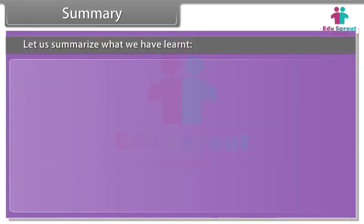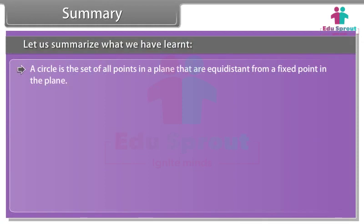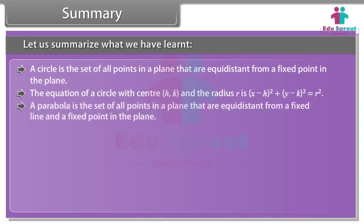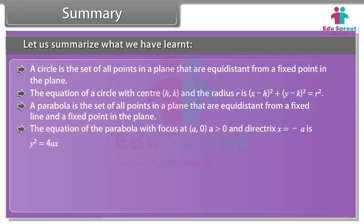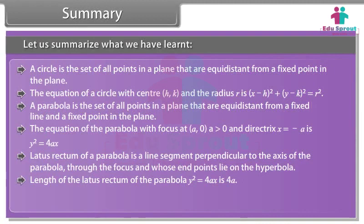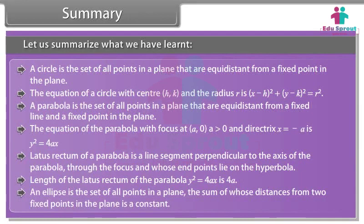Let us summarize what we have learned. A circle is the set of all points in a plane that are equidistant from a fixed point in the plane. The equation of a circle with center (h, k) and radius r is (x − h)² + (y − k)² = r². A parabola is the set of all points in a plane that are equidistant from a fixed line and a fixed point in the plane. The equation of the parabola with focus at (a, 0), a > 0, and directrix x = −a is y² = 4ax. The latus rectum of a parabola is a line segment perpendicular to the axis through the focus, with endpoints on the parabola, and its length is 4a.